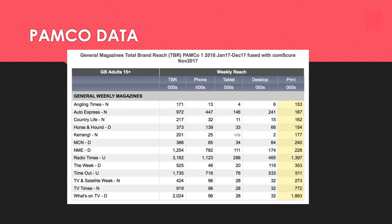This data is gathered by these companies and you can use it to make decisions. For example, if you wanted to advertise a really fancy, expensive watch, you could use PAMCO data to decide which magazine would be the best fit for your product.